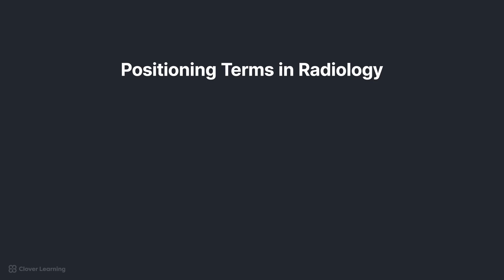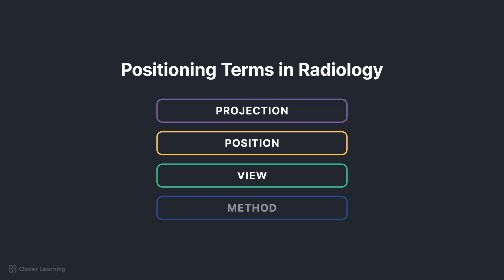The four most common positioning terms used in radiology are projection, position, view, and method. Let's look at each of those individually.